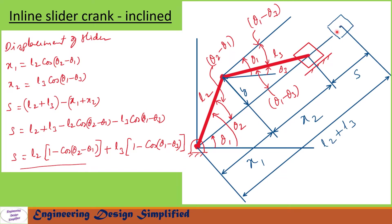When theta 2 equals theta 1, the slider comes to the extreme position. The distance between the fixed pivot and the slider center can be written as L2 plus L3, since this segment is L2 and this is L3, giving a total distance of L2 plus L3. Now, let us define distances along this inclined plane: the distance from the fixed point to the crank pin as x1, and similarly the distance from the crank pin to the slider as x2.